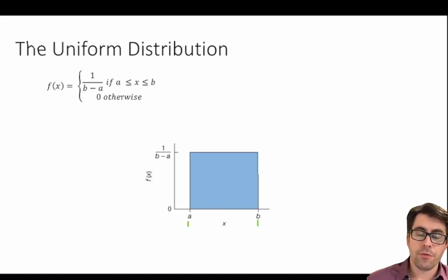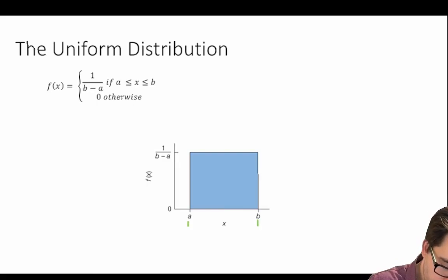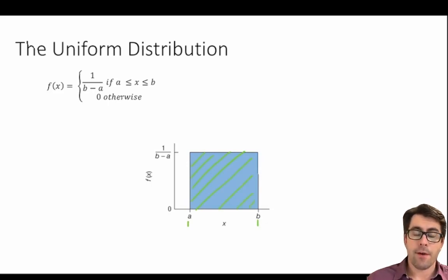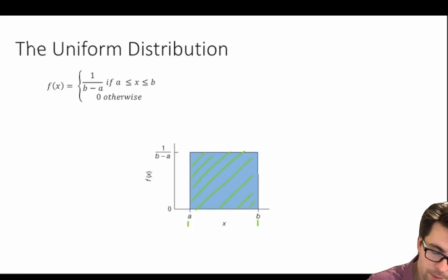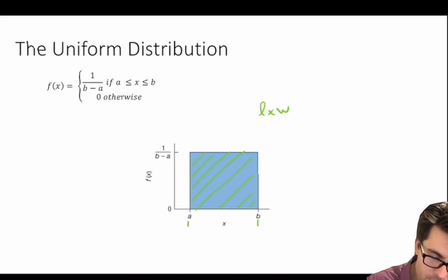Importantly, a uniform distribution is a continuous probability model, which means that the probability underneath the curve — or in this case, the rectangle — is equal to one. When you have a uniform probability distribution, you will always have a rectangle, and the area underneath that rectangle will always be equal to one. The area of a rectangle is equal to length times width, so length times width will equal one for our uniform probability model.